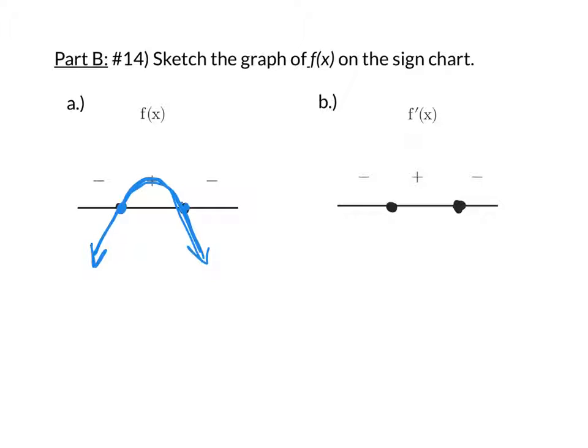Because in part B, we want to sketch the graph of f of x. And the sign chart is exactly the same. Except this is a sign chart for the derivative of f of x. And remember, the derivative is the slope of the tangent lines.